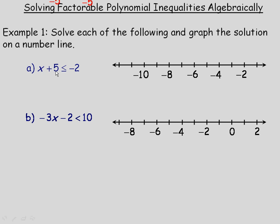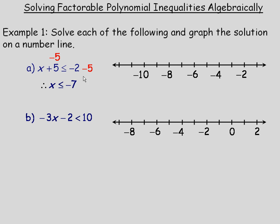The opposite of adding 5 is to subtract 5, so we'll subtract 5 from both sides. On the left, 5 and negative 5 add to 0, so we're left with just x, and negative 2 subtract 5 is negative 7. So we have x is less than or equal to negative 7.